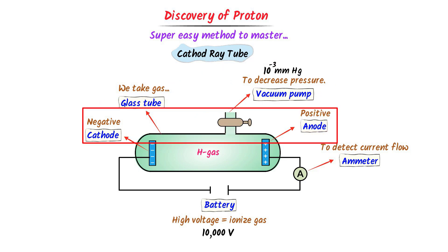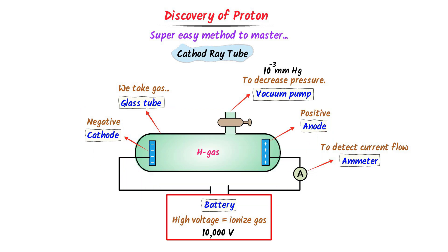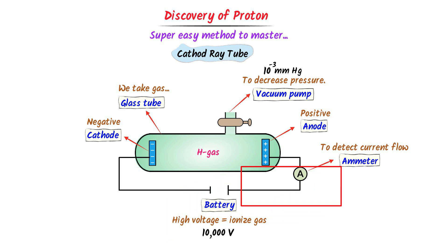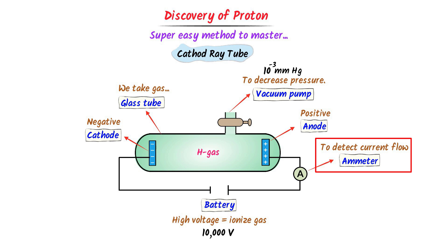Thirdly, we place two metallic strips — cathode and anode — inside the glass tube. Fourthly, we use a high voltage source like a battery to produce 10,000 volts to ionize the gas. Finally, we use the ammeter to detect the flow of current inside the cathode ray tube.